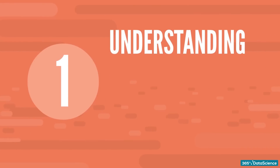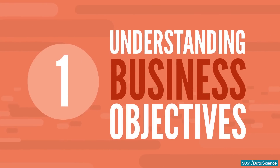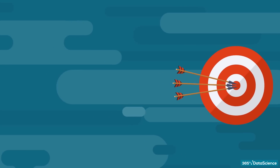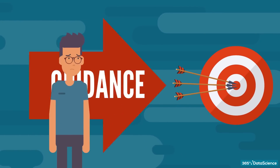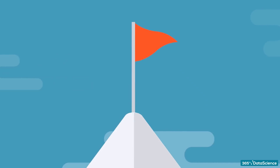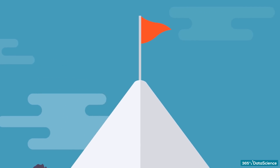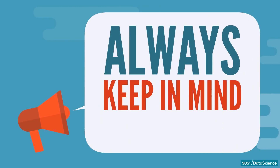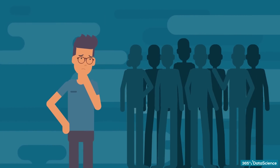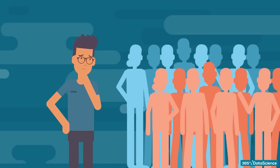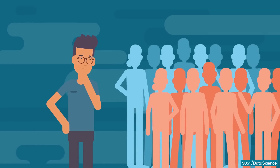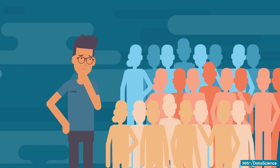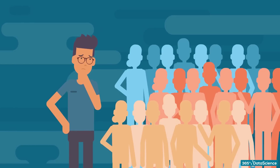Starting with number one: understanding business objectives. Data scientists must understand the strategic goals of the company and use them as guidance for the whole data collection and interpretation process. This guarantees that the analytics you provide will ensure the competitive edge of your company. Always keep in mind your audience — is the data information for internal use by the board of directors or the sales managers? Or is it for external use by capital markets or suppliers? Each audience has different needs, even if the overall strategic objective is the same.